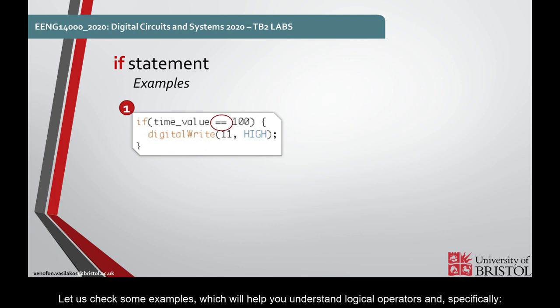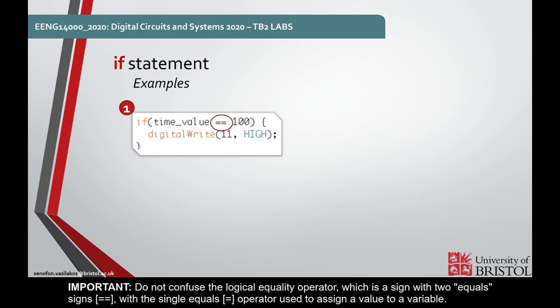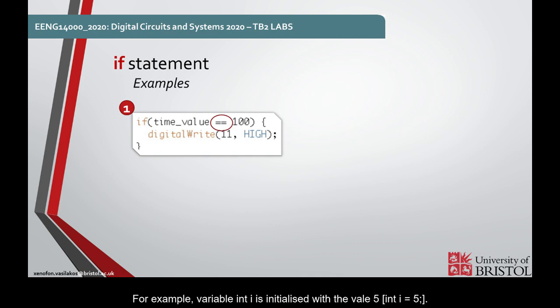Let us check some examples which will help you understand logical operators, and specifically the first one is equals. Important! Do not confuse the logical equality operator, which is assigned with two equal signs, with the single equals operator, which is used to assign a value to a variable. For example, int i is initialized with the value 5.